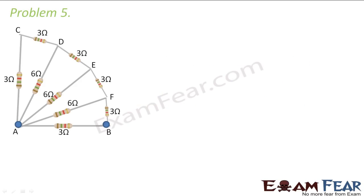We have to calculate the equivalent resistance between the points A and B. Since the circuit looks quite complicated, it is difficult to guess the current distribution. Even if we try to track what current flows in which arm, we get confused. So the approach we follow for such circuits is to divide the circuit into smaller parts, solve the smaller parts, and reduce the circuit to simpler circuits.